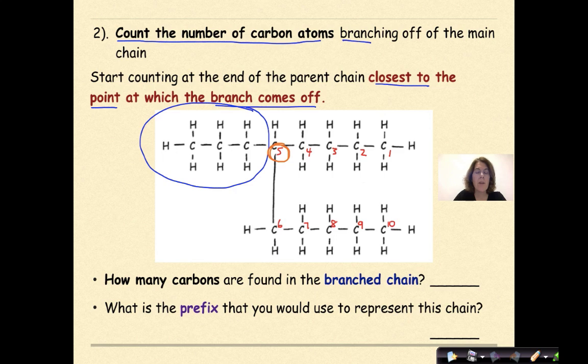The next thing that I want to do is figure out how many carbons are found in the branching chain. Well, there is 1, 2, 3 carbons in this branching chain. Then we ask ourselves the question, what is the prefix that you would use to represent this chain? Well, there's three carbons. So meth-eth-prop, we want to use the word propyl. Prop and then a YL to indicate that it is a branch off the parent chain.